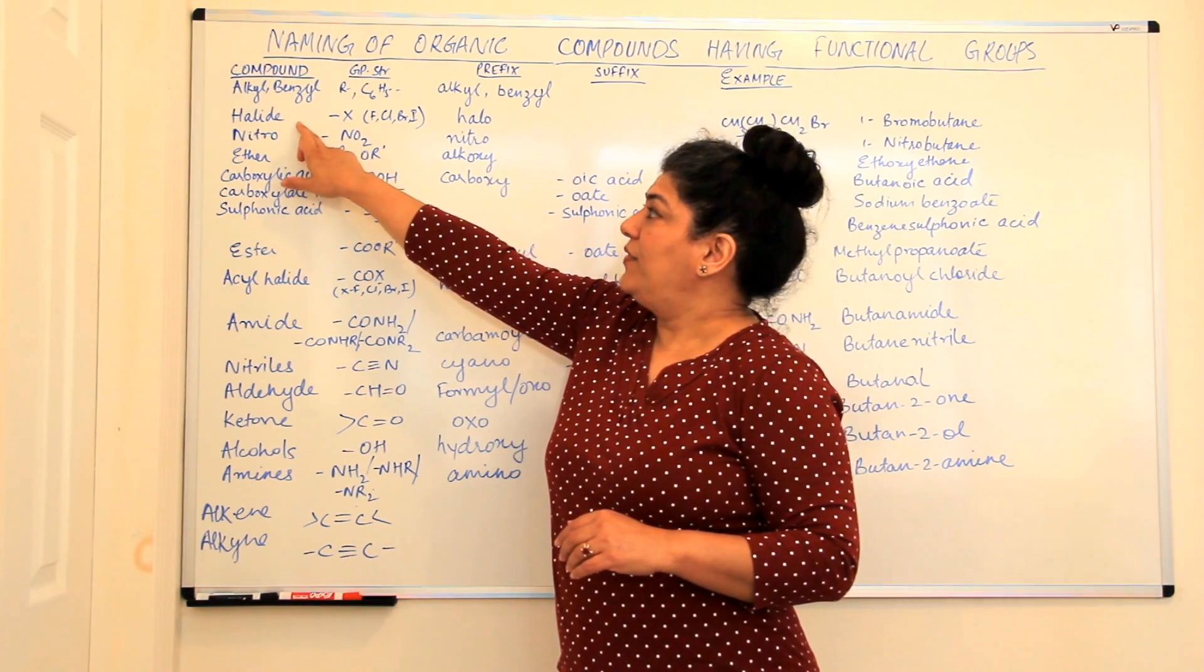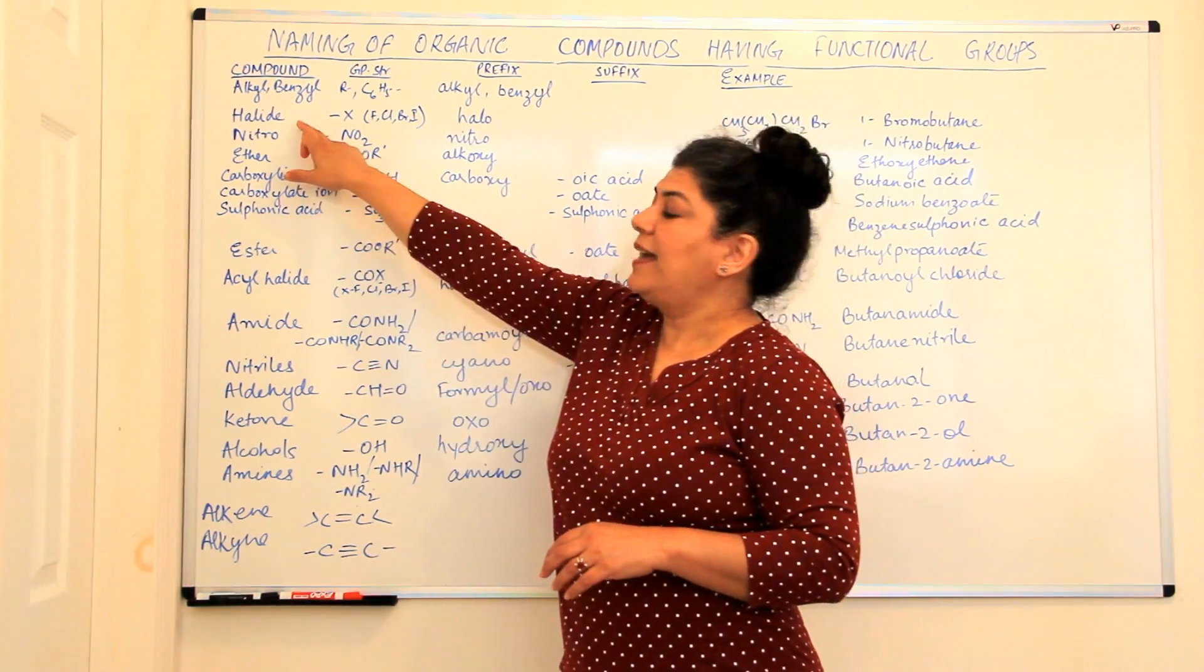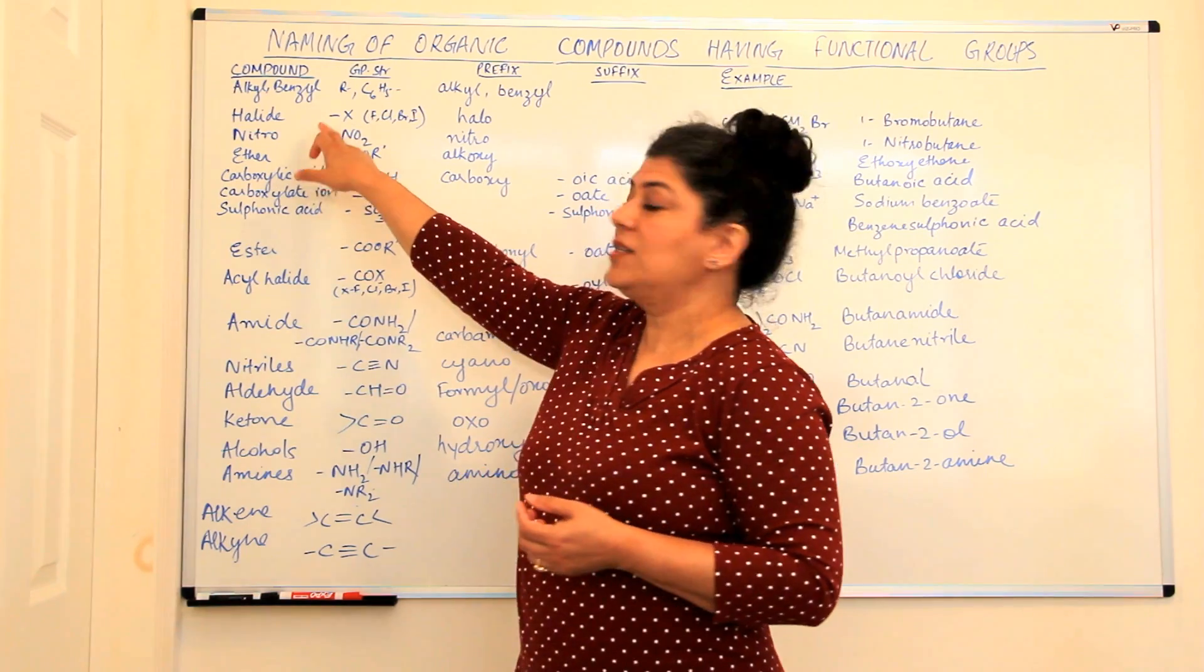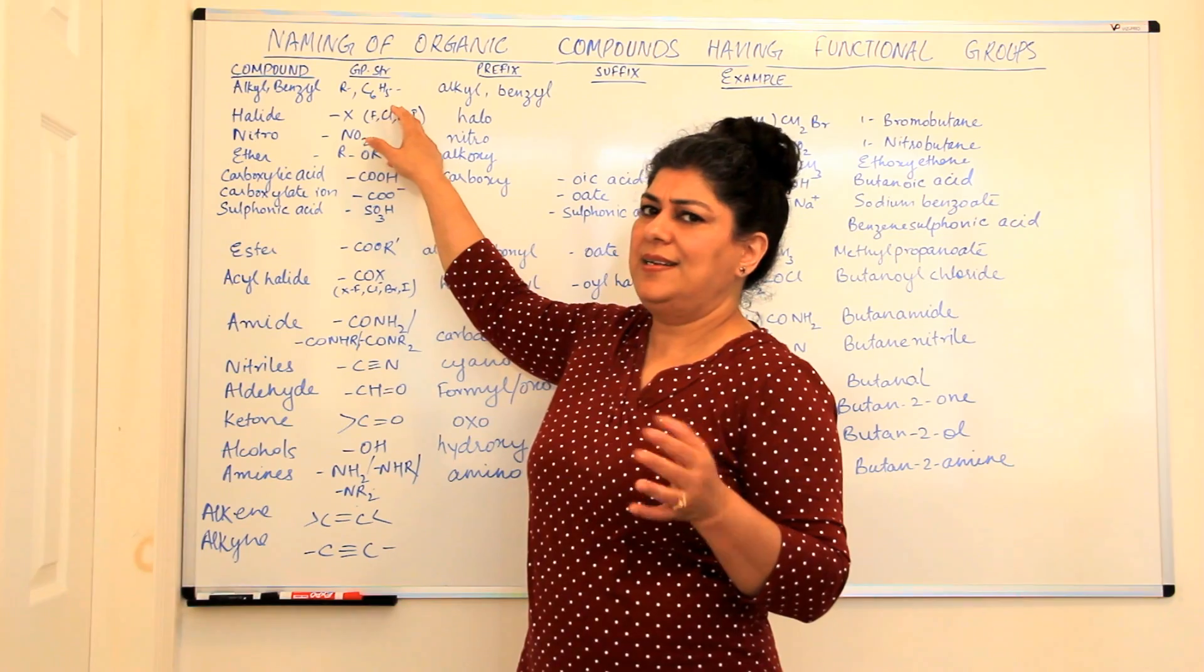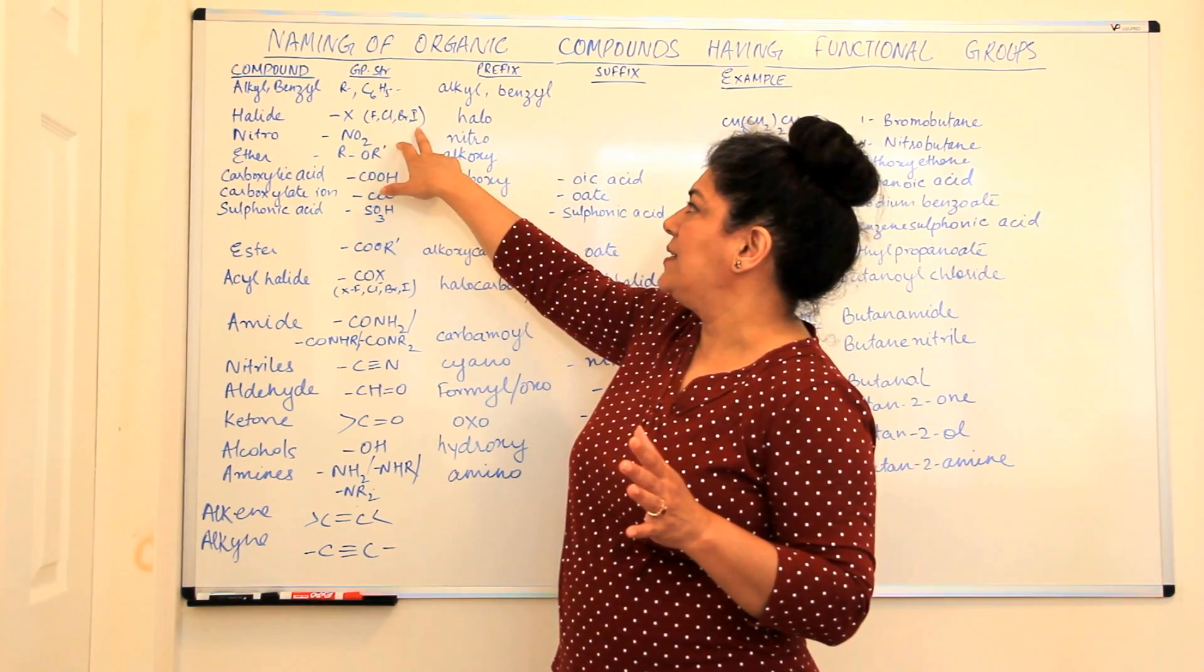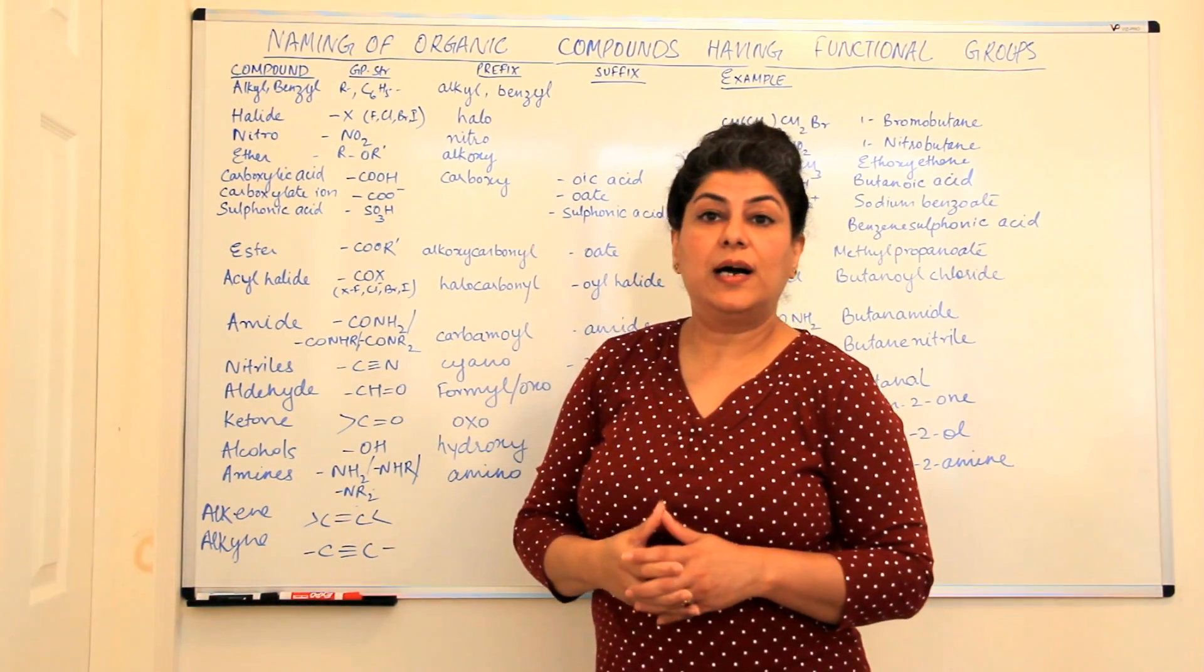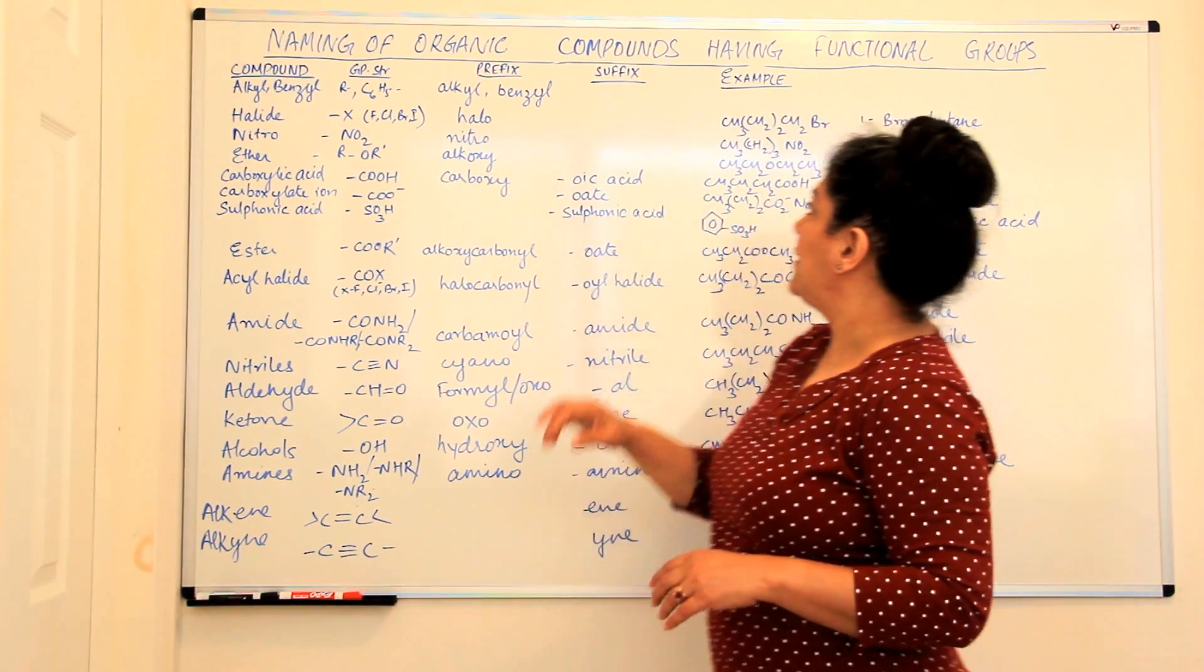The first functional group is a halide. A halide as you know is the 17th group of the elements and it consists of halogens consist of fluorine, chlorine, bromine, iodine and astatine. Astatine is very volatile and hence we do not consider that. We have the halides usually are fluorides, chlorides, bromides or iodides and these are written as halo compounds.